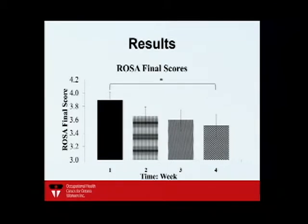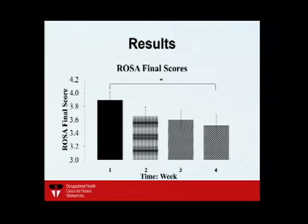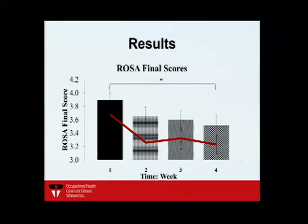What really excited me was how ROSA scores changed over four weeks. Starting close to four on average across 55 participants, the scores dropped over those four weeks — meaning office risk level was decreasing. People were actually using these videos and tools to make substantial changes to their workstations and improve their ergonomics.